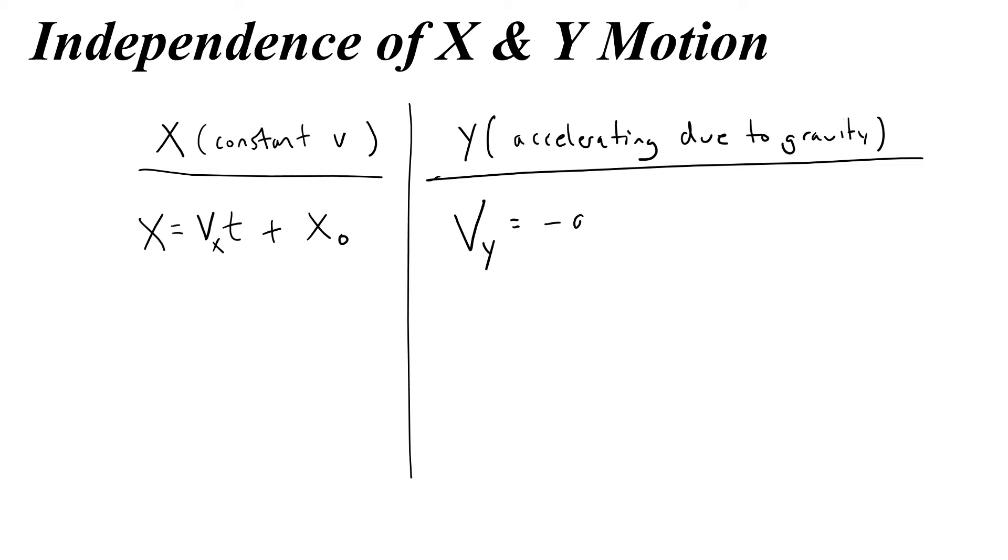So vy equals negative gt plus vy0, which would be the initial downward velocity. The y position would be equal to negative one half gt squared plus normally we would write v0t but now we're writing vy0 times t plus the initial height.